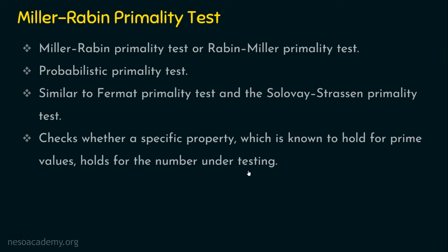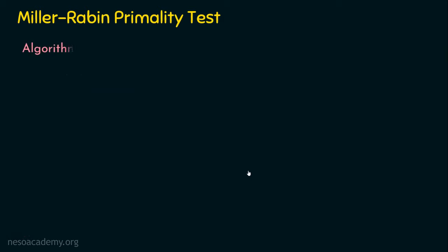Let's see the algorithm, which I will present in three steps. Step number one: we are going to find n minus 1 equals 2 to the power k times m. Assuming we are given a number n to test for primality, we find n minus 1 expressed as 2^k times m.